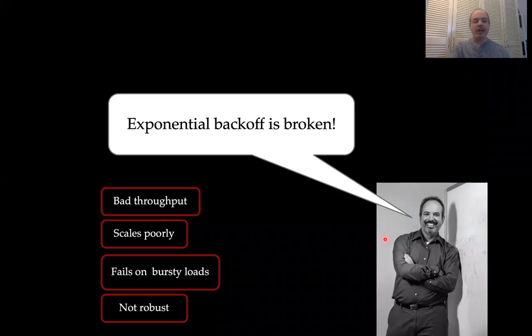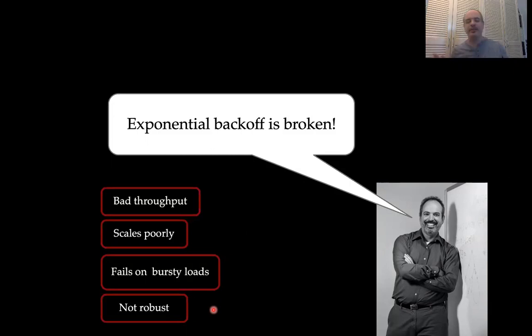Exponential backoff is actually very bad in bursty situations. To summarize: exponential backoff gets poor throughput, is very inefficient in channel usage, fails on bursty loads, and is terrible for robustness as well. Anytime you have noise or an attack, everyone doubles their window size. So a very small attack causes everyone to spend a lot more time processing — it responds very badly to noise or attacks on the system.